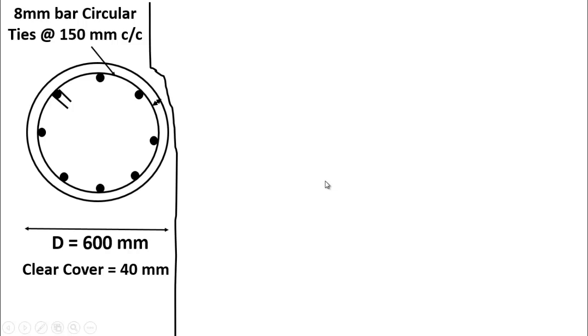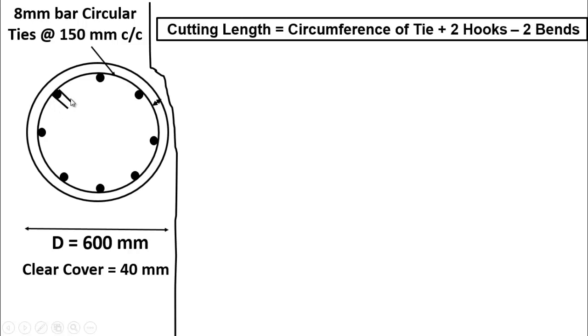Now to calculate the total cutting length of this circular tie starting from this point to this end point, we will use the following method. The formula for cutting length of circular ties is: cutting length equals circumference of the tie plus two hooks minus two bends.